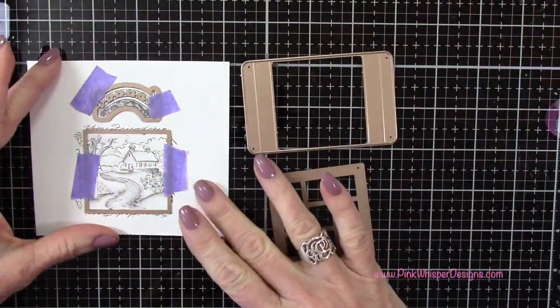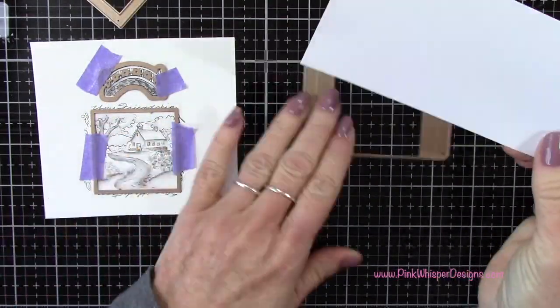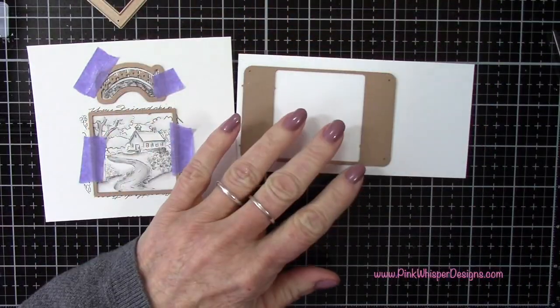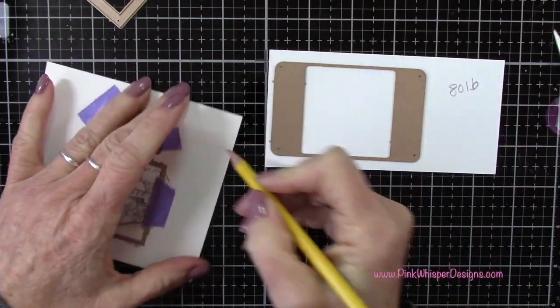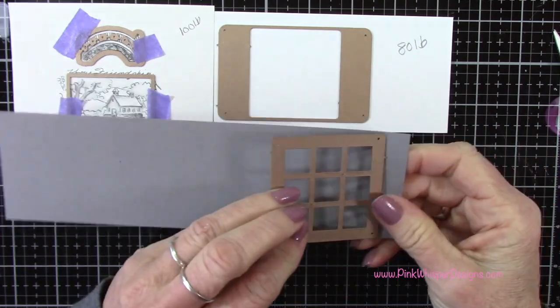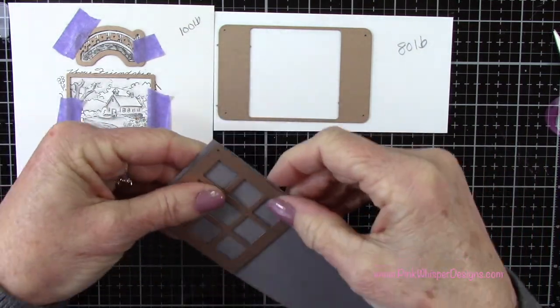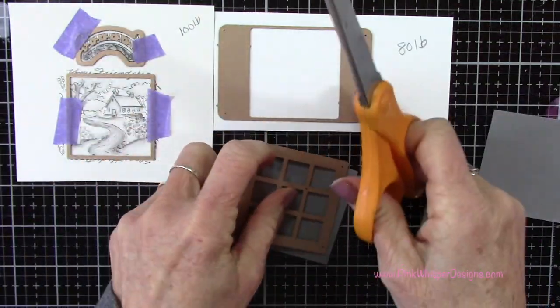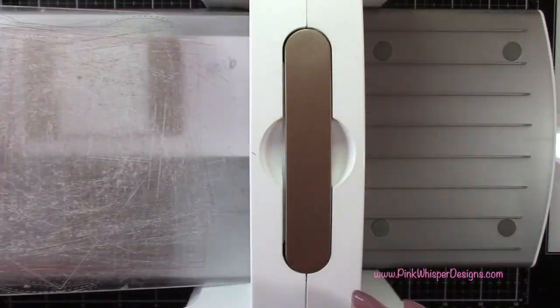Now for that piece that's going to create the shadow box I'm going to use some 80 pound cardstock, and then I'm just going to grab some gray cardstock to do the window portion. Any weight cardstock here is fine. I'll go ahead and run those through the die cutting machine.